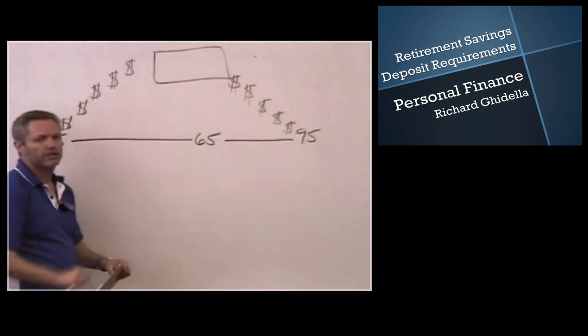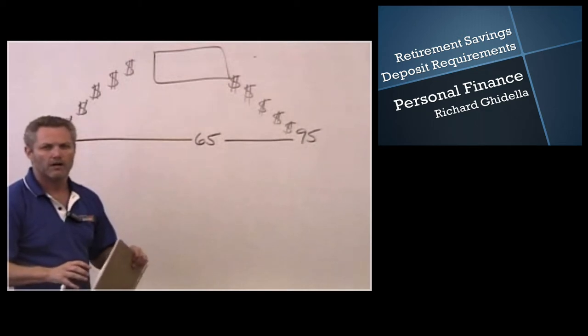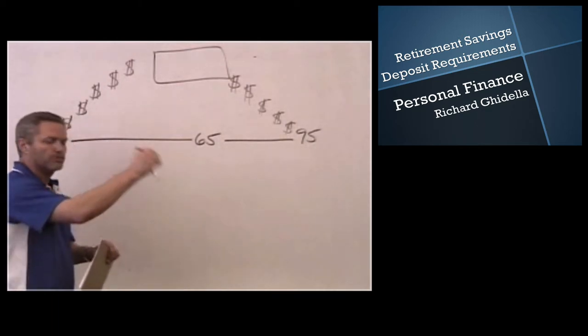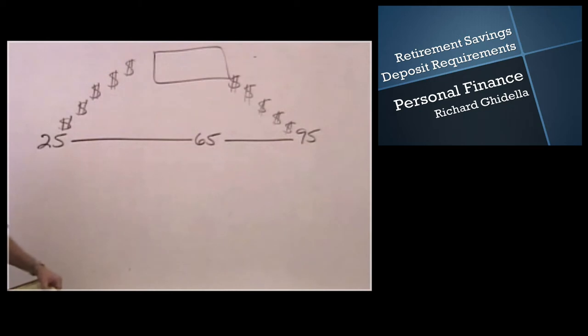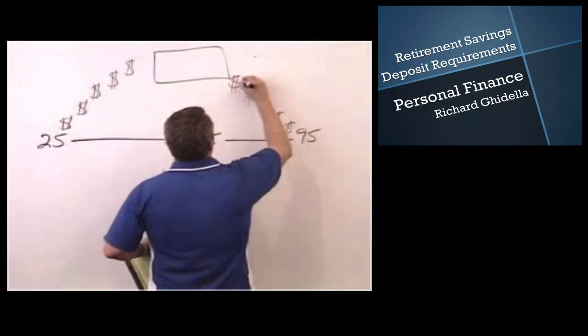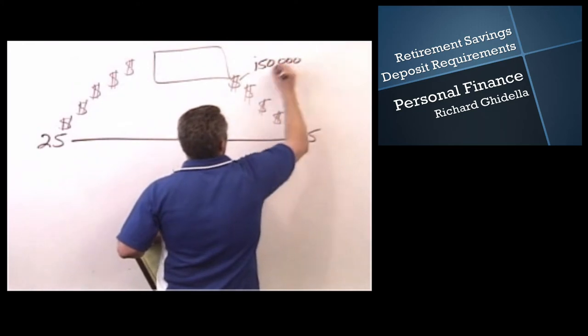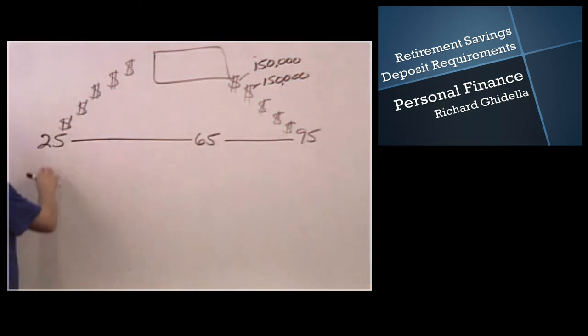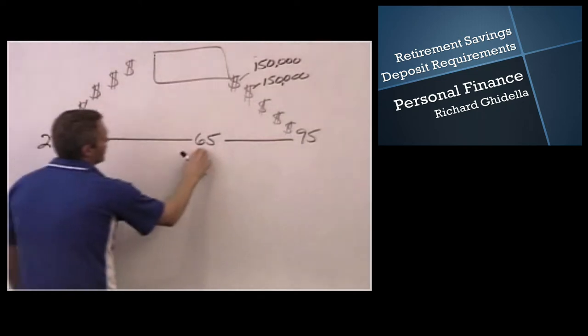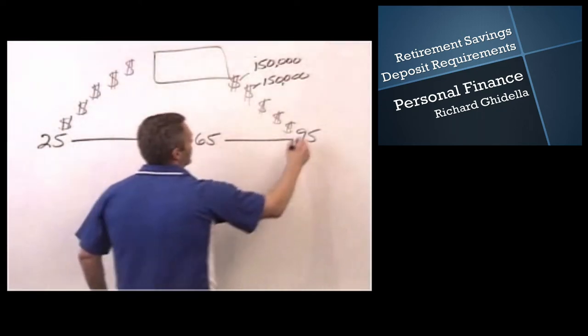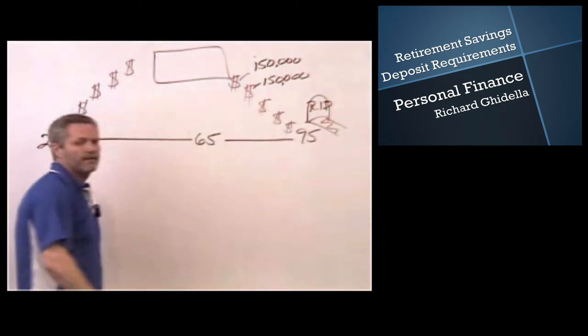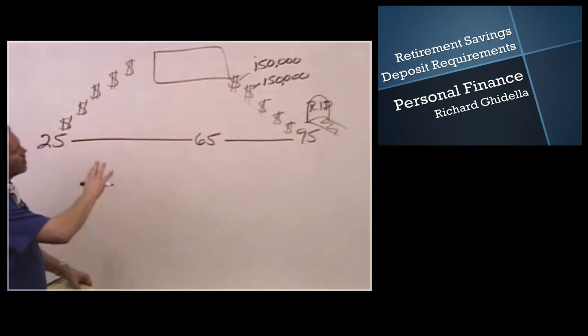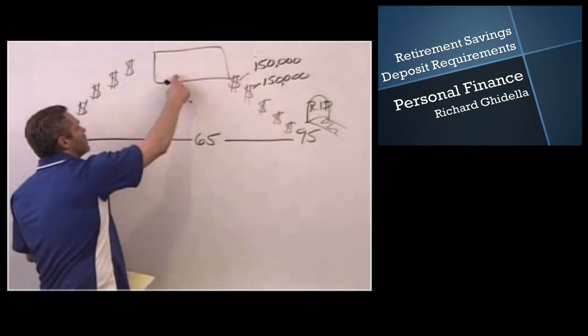We've already covered the introduction to the requirements of how much we need to deposit to reach our specific retirement goals. So now we're going to work through a couple problems. The first thing I'm going to do is I'm going to assume that I want $150,000 a year in retirement, each year. I am 25 years old today. I am going to retire at 65. I am going to drop dead at 95.